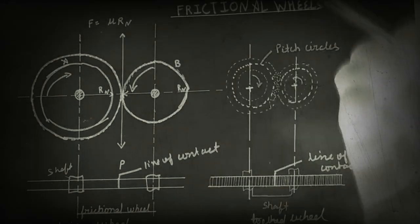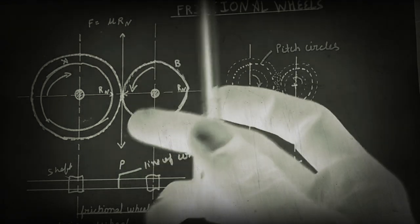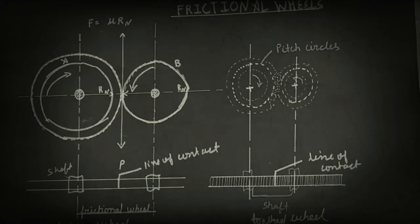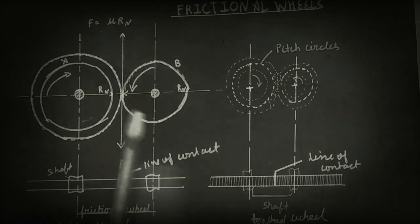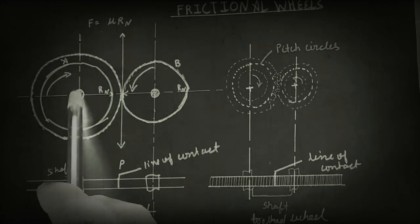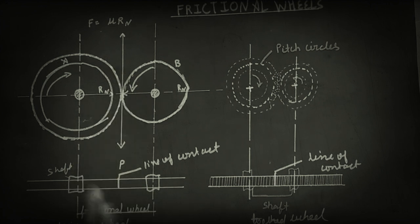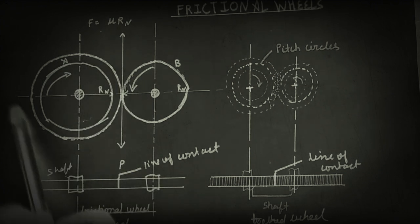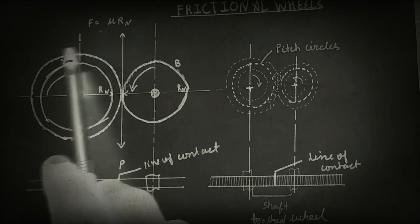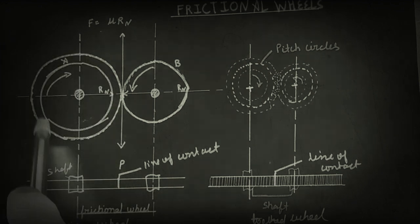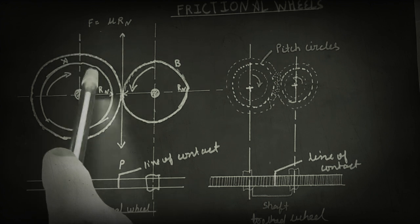How can we understand the Frictional Wheel? We can understand by taking two examples: one is a Frictional or Plain Wheel and another is a Tooth Wheel. First, we consider two wheels A and B mounted on two shafts having a rough surface with no projection on their periphery.